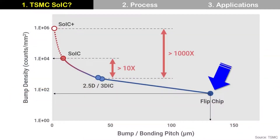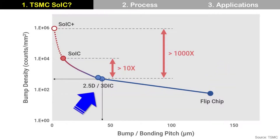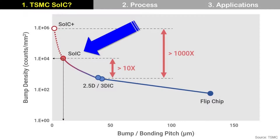This graph shows the relation between bump pitch and bump density. Decreasing bump pitch from flip chip with 100-plus-micrometer bump pitch, to 2.5D with less than 50-micrometer micro-bump pitch, then to SOIC with 10-micrometer pitch without bump, drastically increases bump density. More bump or bonding density means faster data processing performance.